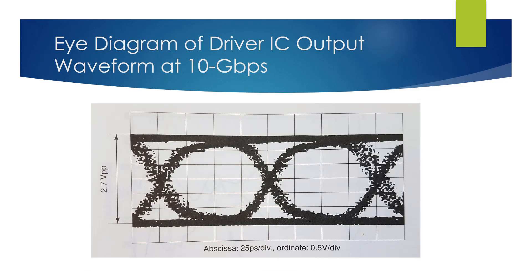The driver IC's output waveform is close to rectangular. This figure shows the eye diagram of the output waveform of the driver IC at 10 gigabit per second operation. The test input signals have amplitude of 0.8 volt peak-to-peak and the output amplitude is 2.7 volt peak-to-peak. For small signal frequency characteristics, the gain was 15 dB and the negative 3 dB bandwidth is 9.5 GHz.